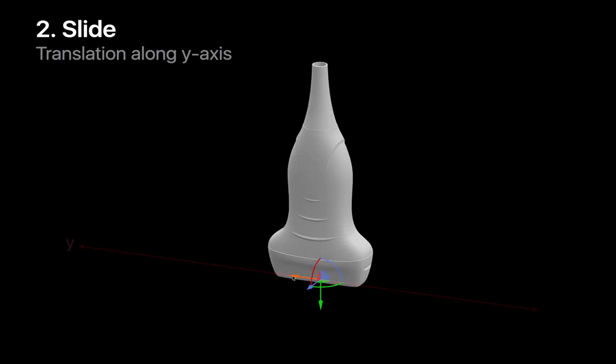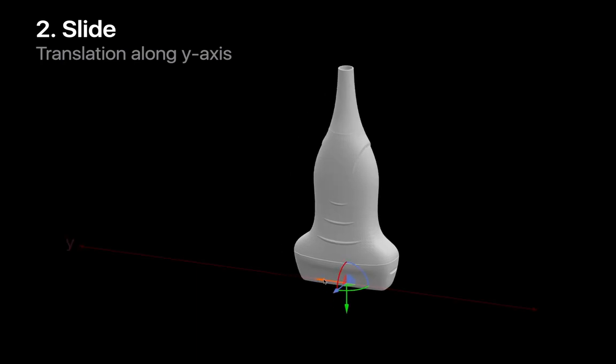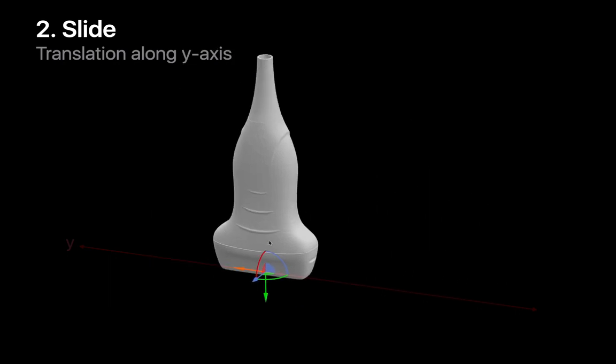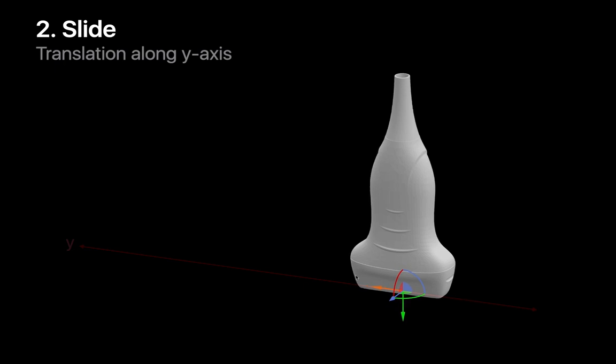Motion along the long axis of the probe across the body is called sliding. Notice that the angle of the probe relative to the skin surface remains perpendicular and fixed.